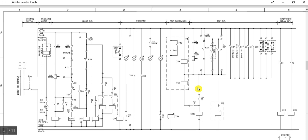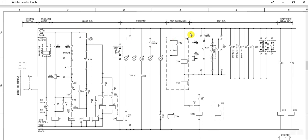This control schematic is for an oil field transformer feeder. The supply comes from 11kV or 6.6kV switchgear, and the outgoing feeder goes to a step-down distribution transformer — for example, 6.6kV by 415V or 11kV by 415V. This is specifically for an oil field transformer feeder.